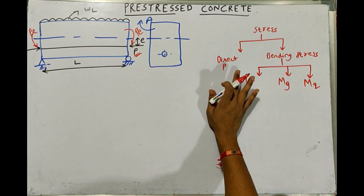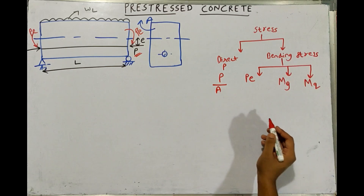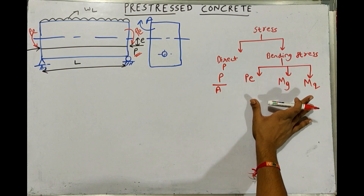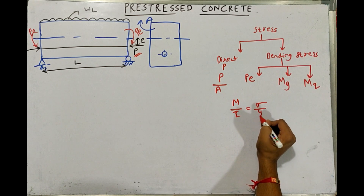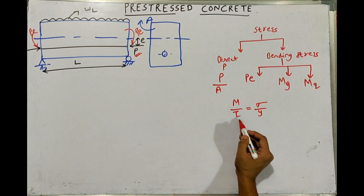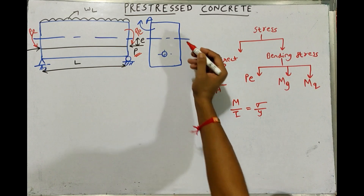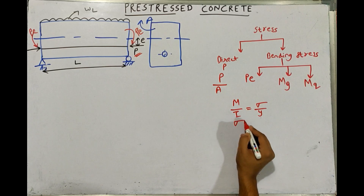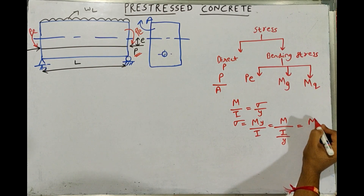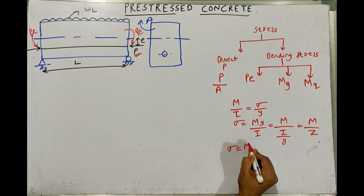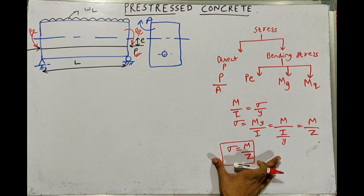The direct stress is equal to force upon area, so it is P/A. For bending stress, we use the flexure equation from Strength of Materials: M/I = σ/y, where M is the bending moment, I is the moment of inertia, and σ is the bending stress at a distance y from the neutral axis. From this, sigma equals M·y/I = M/(I/y) = M/Z. So we conclude that sigma equals M/Z. This equation is used many times in pre-stressed concrete and cannot be forgotten.